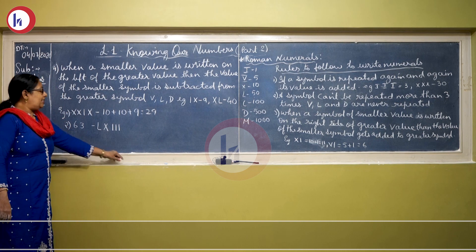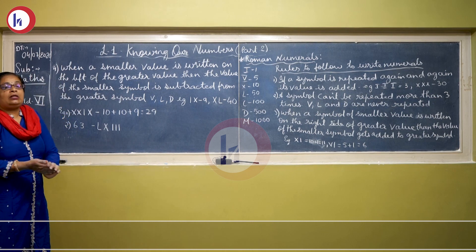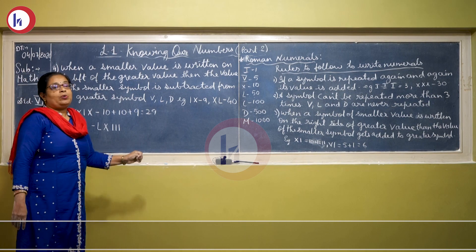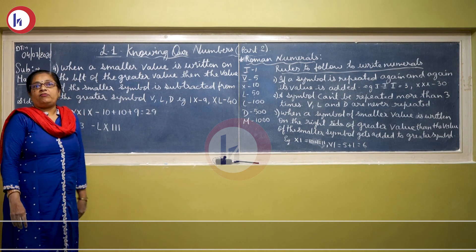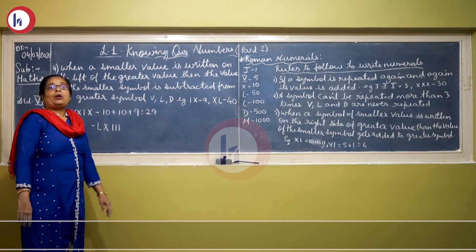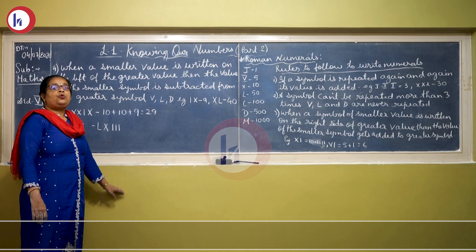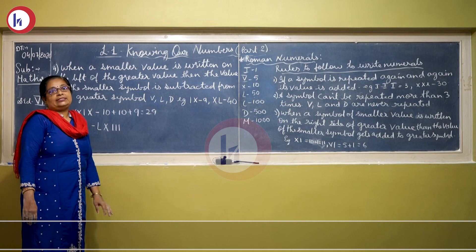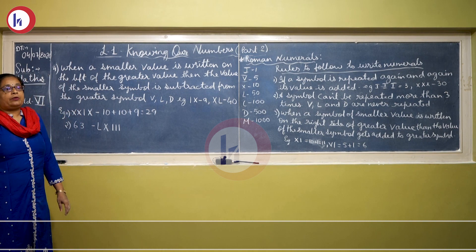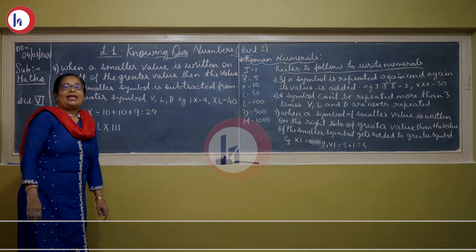I hope all of today — what I have explained about the estimation, the larger numbers, and the Roman numerals — you have understood properly. Exercise 1.2 is given, so see that you have solved that exercise in your classwork. Have a nice day. Thank you.